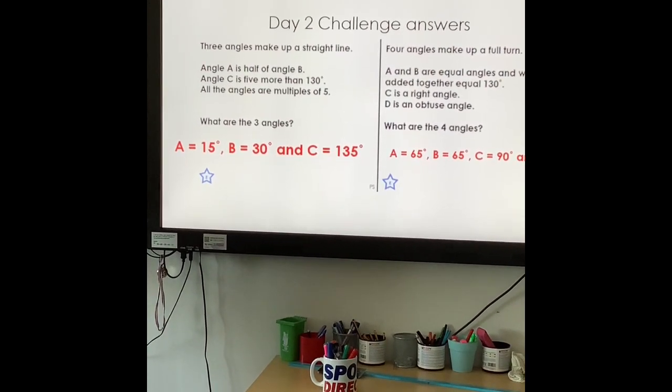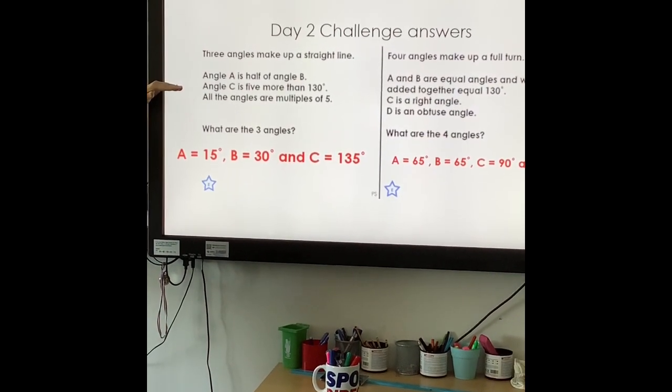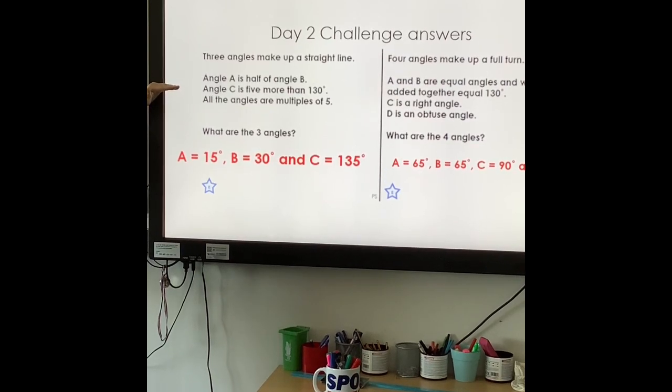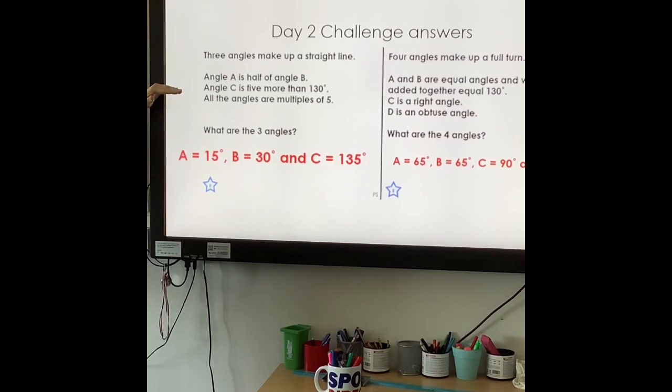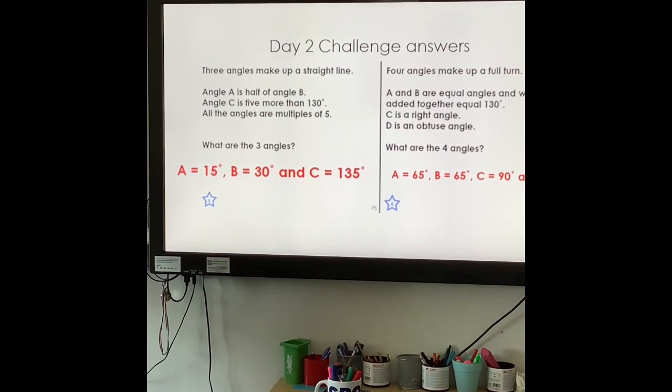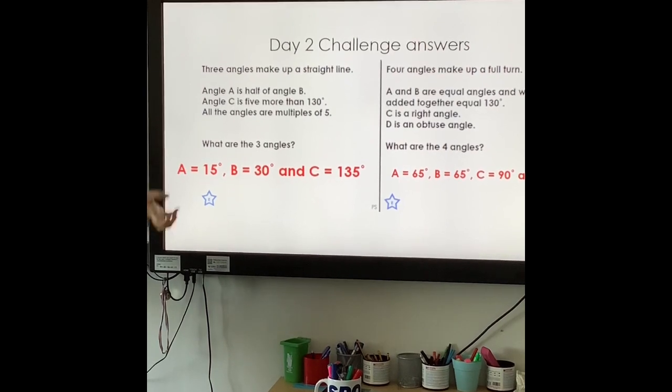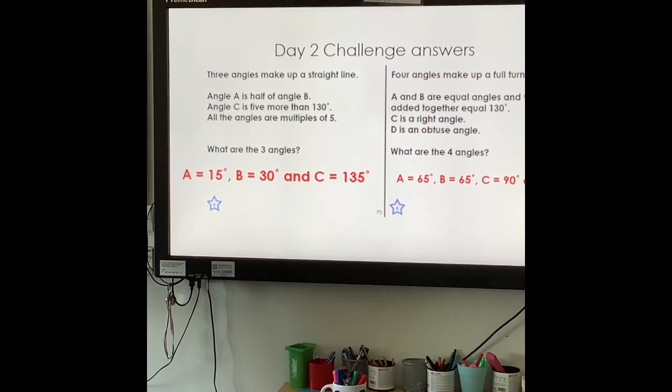To work this one out I probably would have started with angle C knowing that it's five more than 130 degrees means it's 135 degrees. I then would have taken that away from 180 to work out what I was left with which would be angle A and B added together and then A is half of B so you can work that out from there.